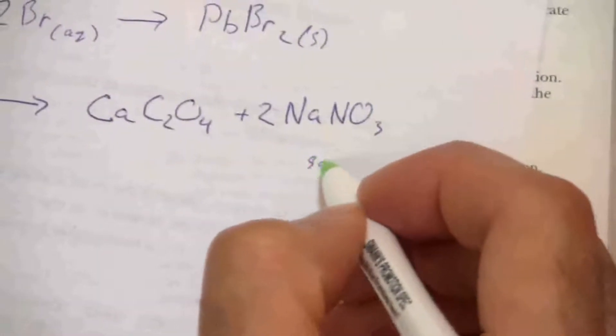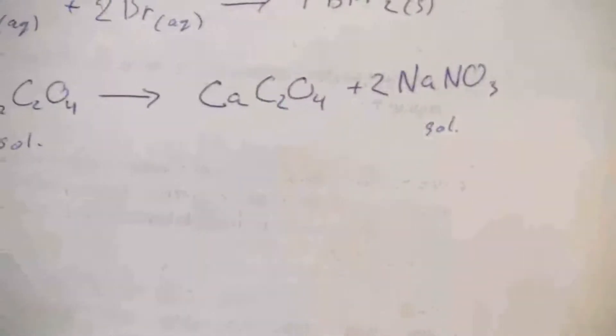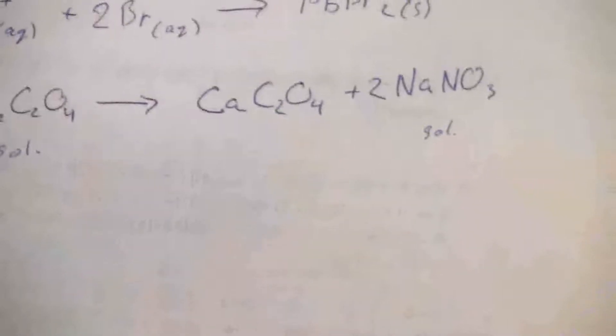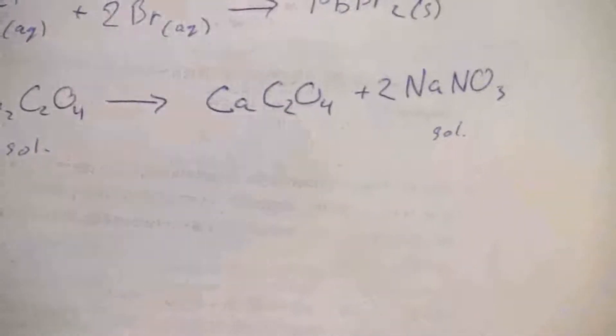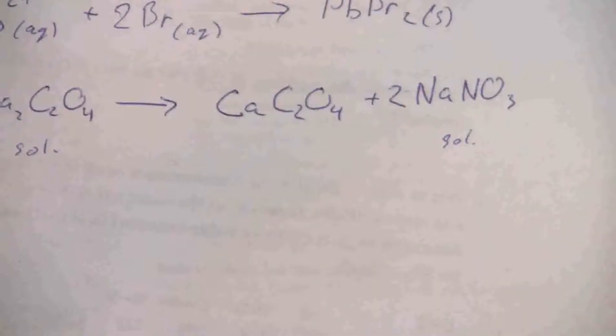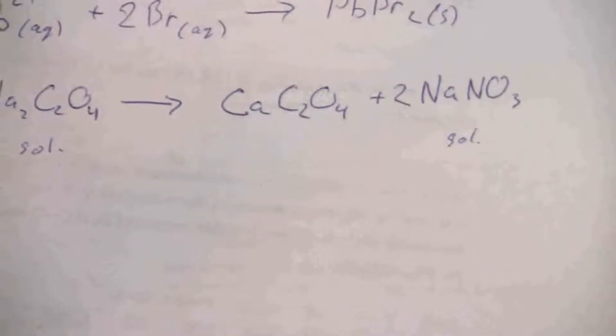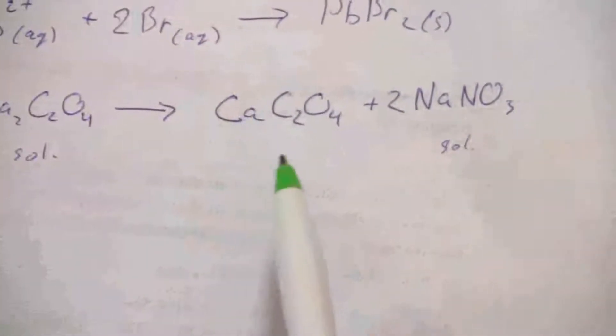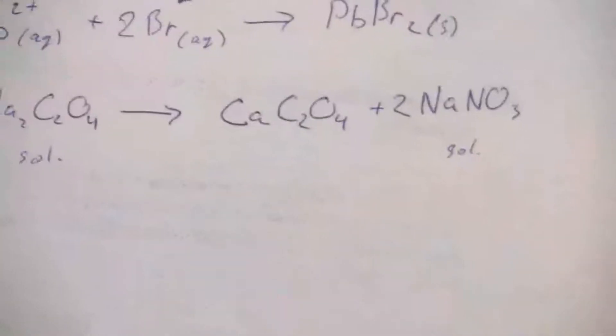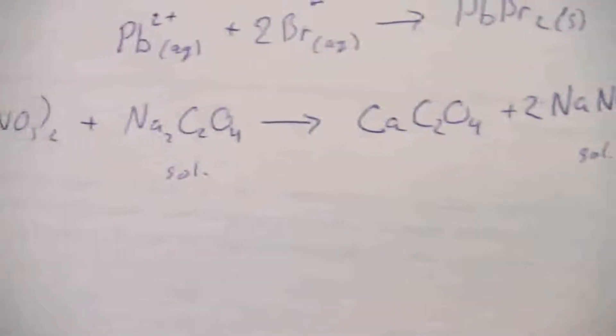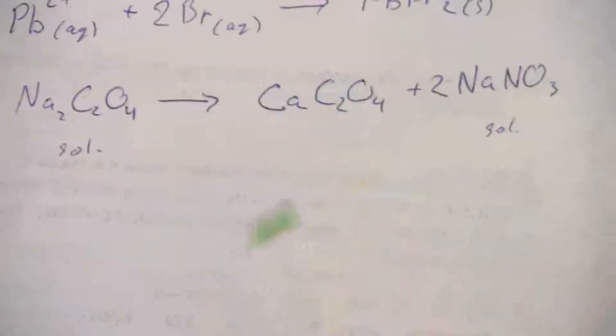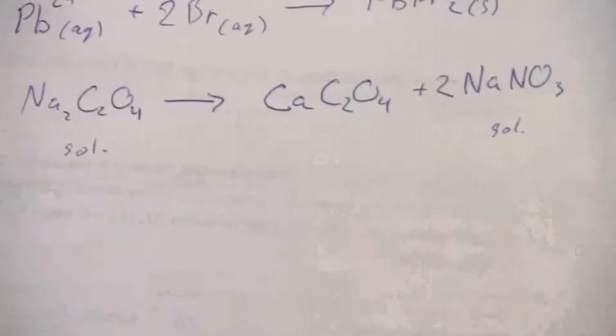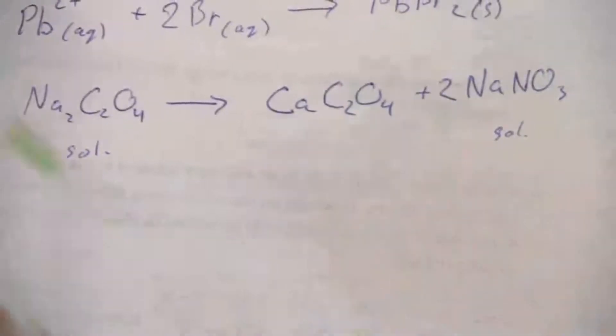So that one's going to be soluble. Here again, nitrate and alkali, so that's soluble. This calcium oxalate we can be pretty sure that that is an insoluble compound. However, it is possible to have everything be soluble. What that would indicate is that there's not going to be a reaction because if we do the net ionic equation we'll find everything would cancel out. There's no net reaction in that kind of an example.